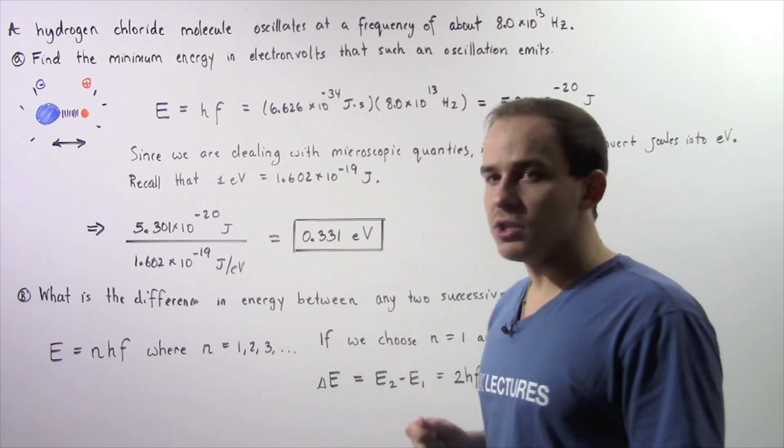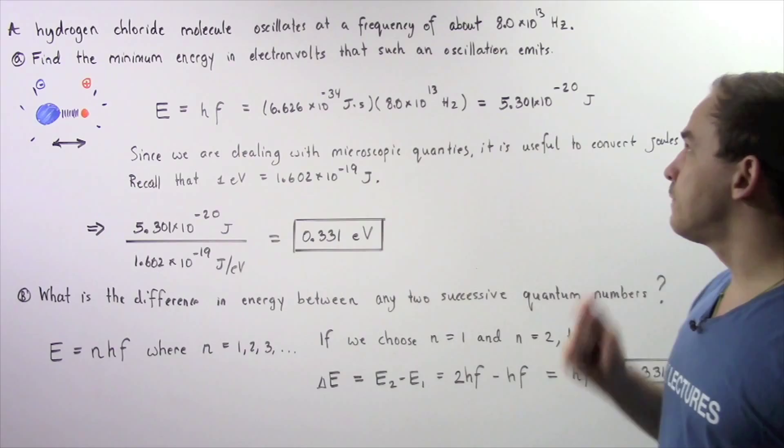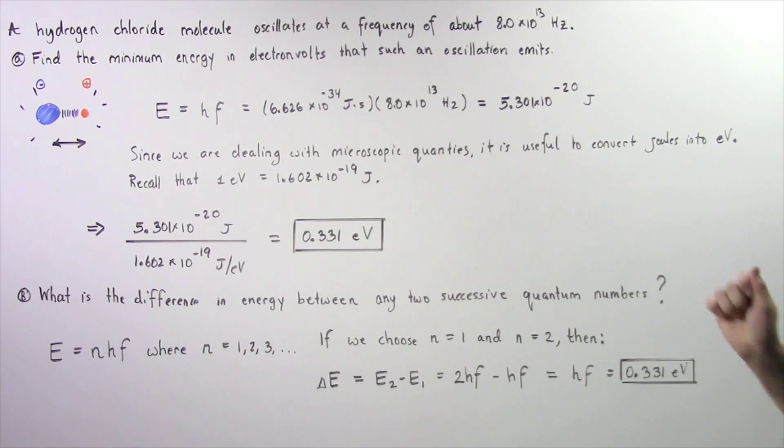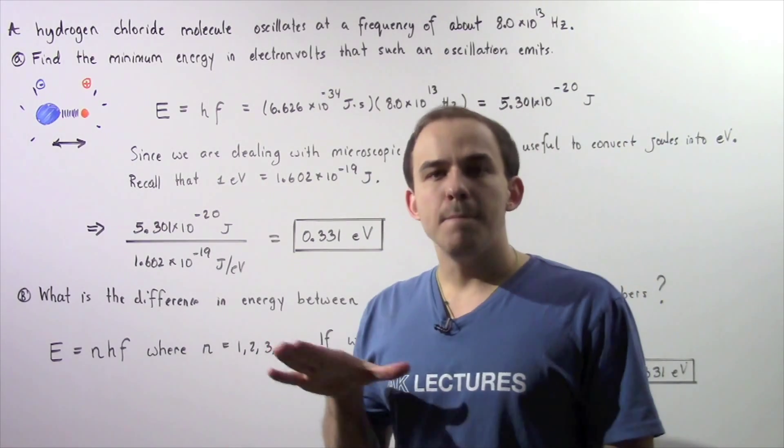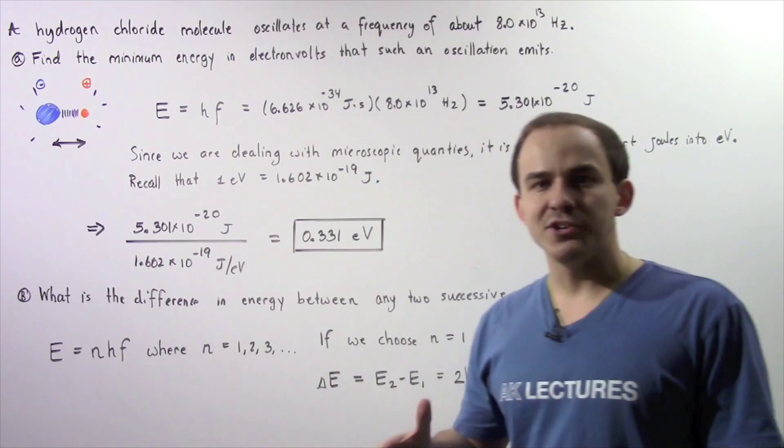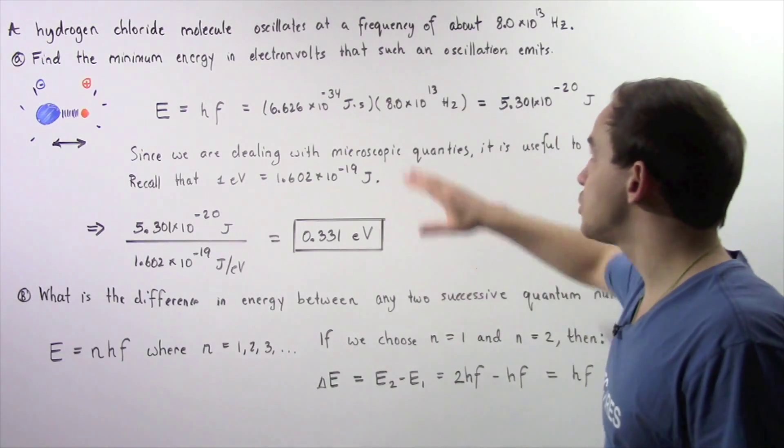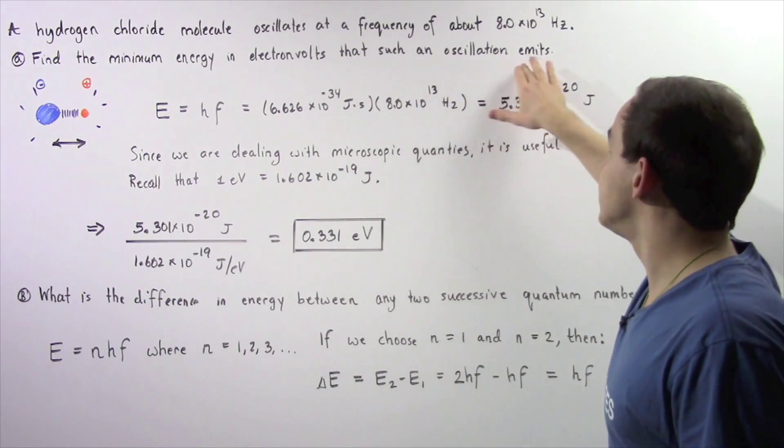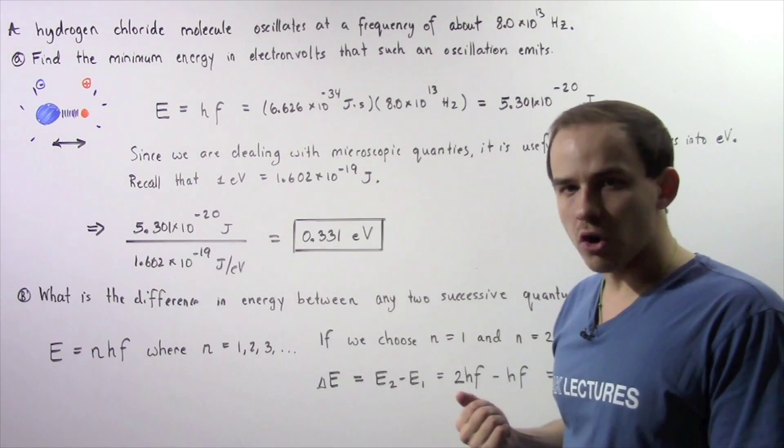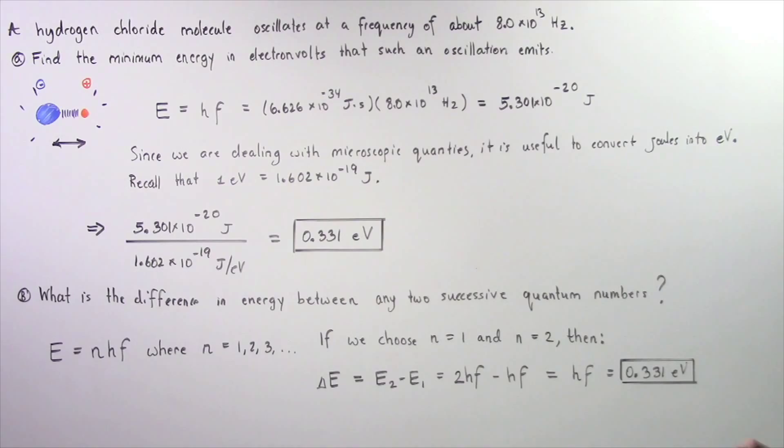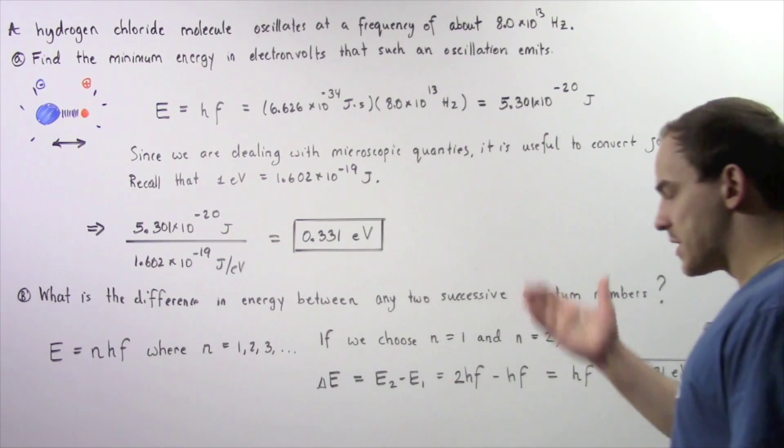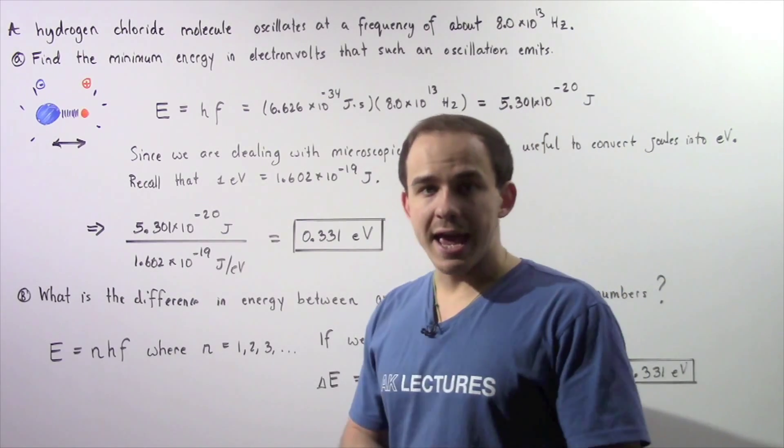A hydrogen chloride molecule oscillates at a frequency of about 8.0 x 10^13 Hz. In Part A, find the minimum quantity of energy in electron volts that such an oscillation emits or absorbs. And in Part B, what is the difference in energy between any two successive quantum numbers? So, let's begin with Part A.